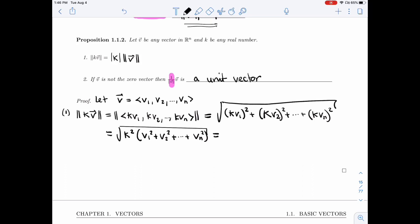And I can split this because I have a product of two things inside the square root. So I can write it as square root of K squared times square root of V1 squared, V2 squared, Vn squared.